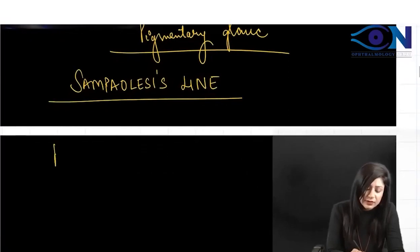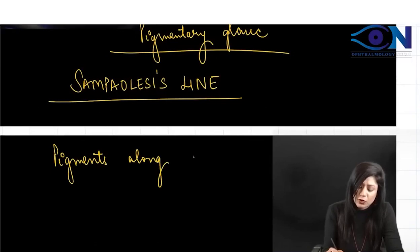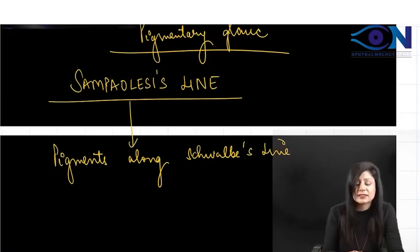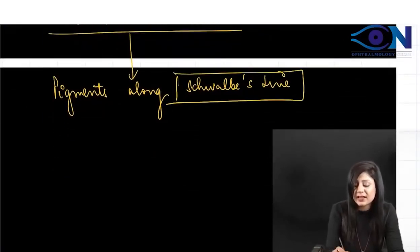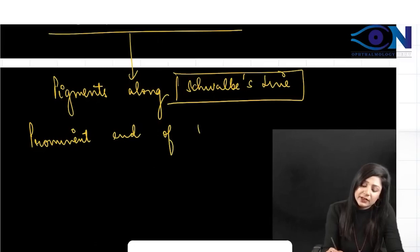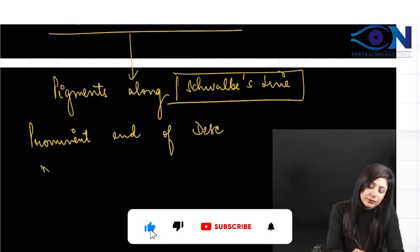Sampaolesi line refers to pigments along Schwalbe's line. What is Schwalbe's line? That is another MCQ. Schwalbe's line is the prominent end of Descemet's membrane of the cornea.